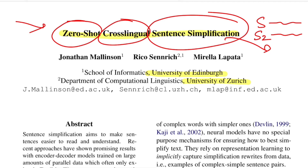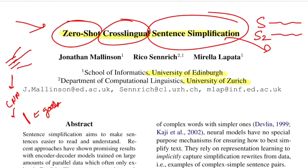Zero-shot is a problem setup where during inference time your model is given samples it has never encountered during training. For example, you train a CNN model on three classes — rats, horses, and fish — but during inference you observe a new example of goats, and your model is supposed to correctly classify that image.